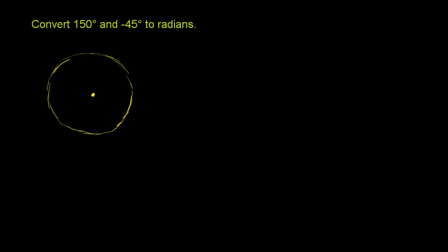Now, if we were to go in degrees — if we were to go one time around the circle like that — how many degrees is that? Well, we know that that would be 360 degrees.